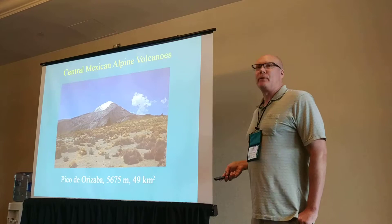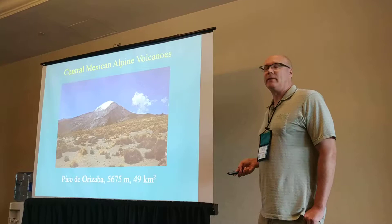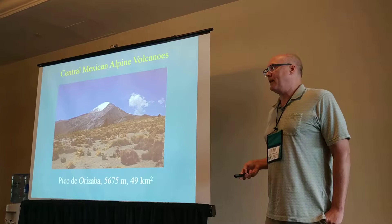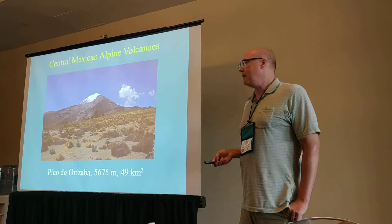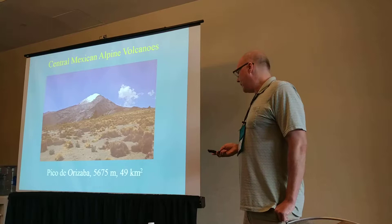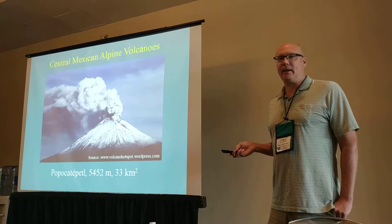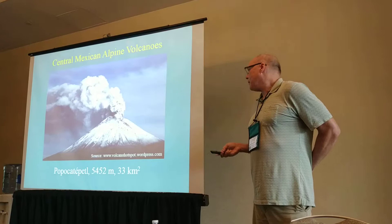Just to show a few of the central Mexican peaks: the highest peak in Mexico is the Pico de Orizaba — in fact, this is the third highest peak in all of continental North America, with only two peaks in Alaska being higher. It's a little more than 5,600 meters, or about 18,000 feet, and there's about 50 square kilometers of alpine vegetation. Probably the most famous alpine area in Mexico is Popocatépetl, the only one that is currently an active volcano, with about 33 square kilometers of alpine vegetation.